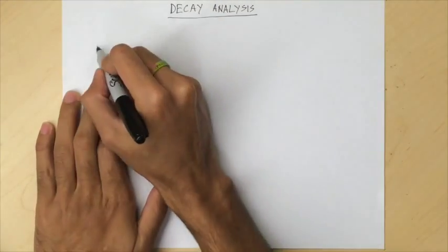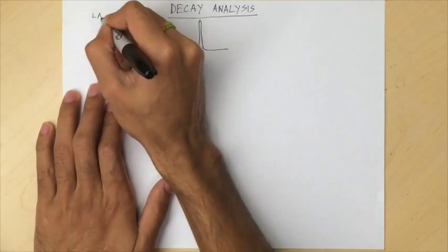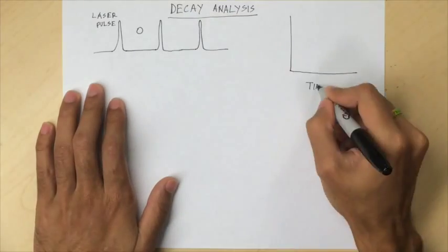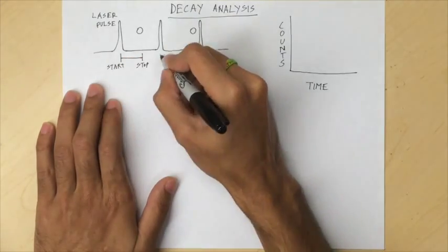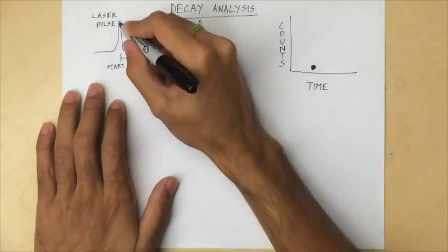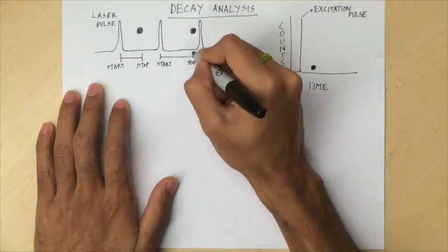For fluorescence lifetime measurements, the time between pulsed excitation and appearance of first photon is noted. This is a stochastic process, typically ranging from a picosecond to a nanosecond.